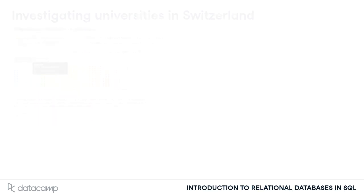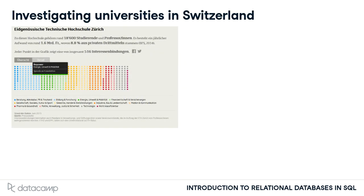Let me tell you a little story first. As a data journalist I try to uncover corruption, misconduct and other newsworthy stuff with data. A couple of years ago I researched secondary employment of Swiss university professors. It turns out a lot of them have more than one side job besides their university duty, being paid by big companies like banks and insurances. I discovered more than 1500 external employments and visualized them in an interactive graphic, shown on the left.